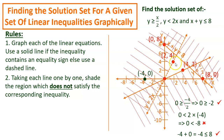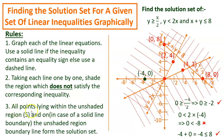This is the solution set. Rule number 3 states that all points lying within the unshaded region S form the solution set. Every point lying on the solid line boundaries is also included in the solution set. However, we cannot include points from the dashed line boundary. So every point within this unshaded region and every point on the solid line boundaries form the solution set of these three linear inequalities containing two variables.